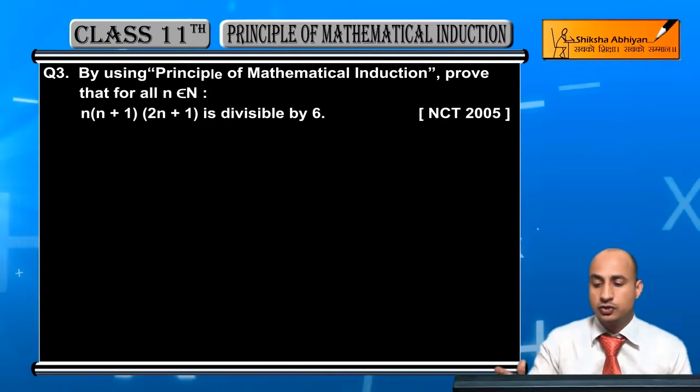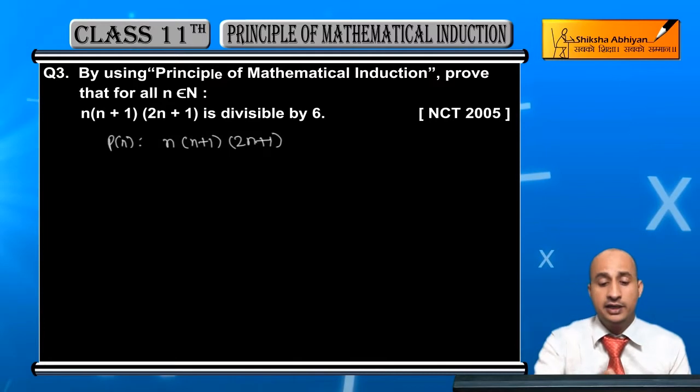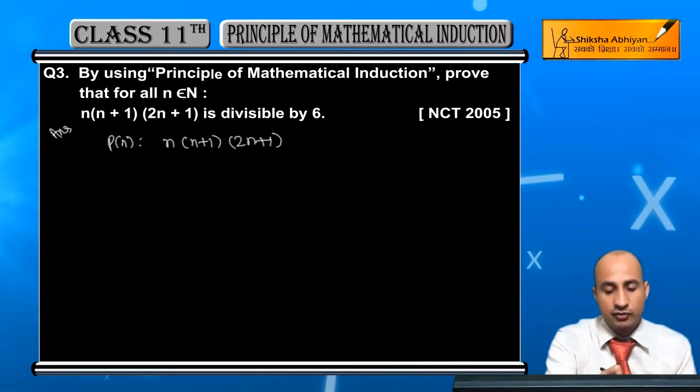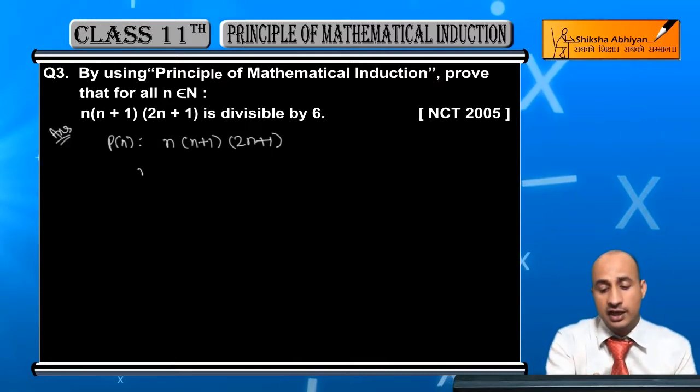So, I will take P(N): N into N plus 1 into 2N plus 1. This is P(N). Now, we will start. First of all, we will check for N equals 1. P is equal to 1, N is equal to 1.